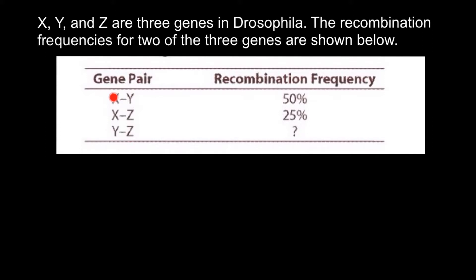that between X and Y gene, recombination frequency is 50%. Between X and Z we have 25% recombination frequency, so we have to find recombination frequency between Y and Z. So here we have between gene X and Y highest frequency of 50% recombination.